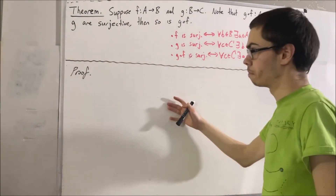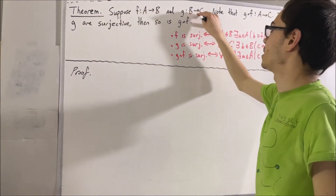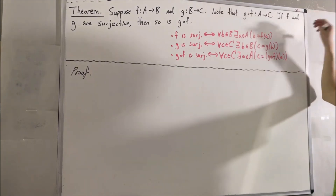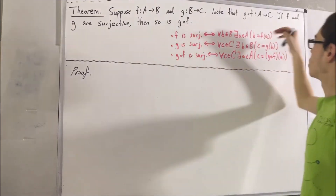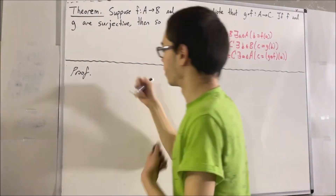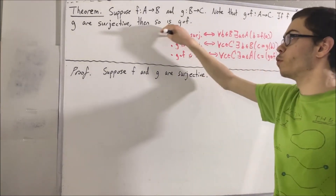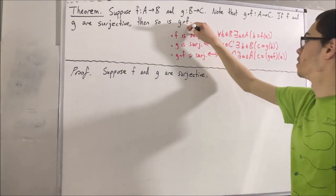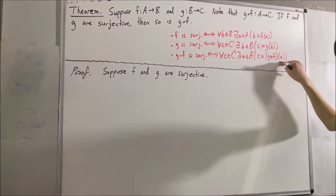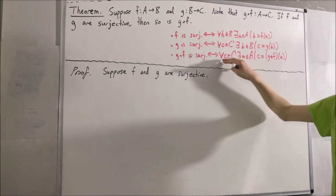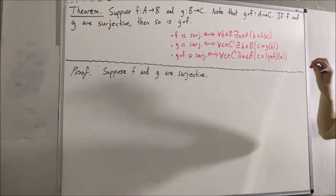So let's get into the proof. Let's suppose that we've already declared functions f from A to B and g from B to C. We want to prove that if f and g are surjective, then g compose f is surjective. So let's suppose that is true. Our whole goal now is to prove that g compose f is also surjective. We're trying to prove a statement about every element in C, so give me an arbitrary element of C — I'll call it c.